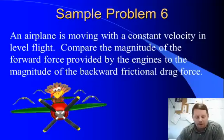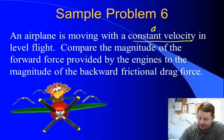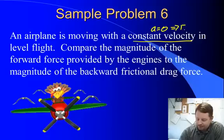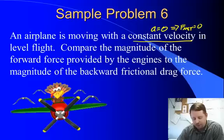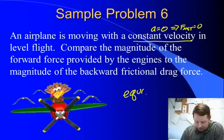One last problem. An airplane moving with a constant velocity. Constant velocity - right away I'm thinking constant velocity means acceleration is 0. Therefore, the net force must be 0 in level flight. Compare the magnitude of the forward force provided by the engines to the magnitude of the backward frictional drag force. Well, once again, if there's no net force, all the forces must be balanced. We have a forward force provided by the engines, a backward force provided by the frictional drag. If there's no acceleration, they must be equal or the same.